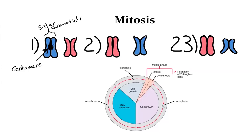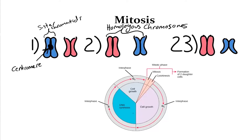If sister chromatids are two exact copies of each other, what are the two chromosomes called that have the same genes but not necessarily the same sequence? We call these homologous chromosomes, or a homologous pair. So with a pair of chromosomes, you have two sister chromatids with the exact same DNA sequences, and another two sister chromatids over here. Before S phase, we had 46 chromosomes total; after S phase, we have 92 chromosomes total, since we now have four chromosomes for each of the pairs.